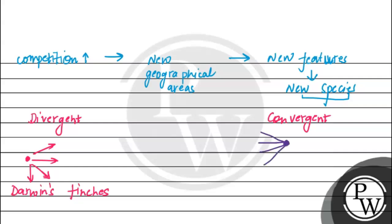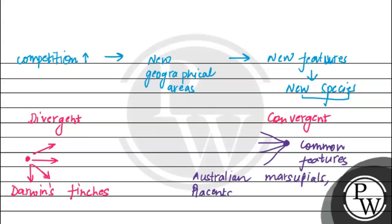Next is convergent evolution. Different organisms which are totally unrelated develop common or similar features — this evolution is called convergent evolution. The example is Australian marsupials and placental mammals. These two groups have completely different origins and don't share a common ancestor, but within both classes there are different species that show common features. One example is the anteater.